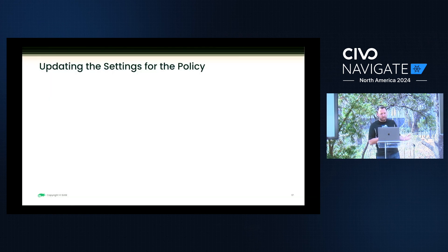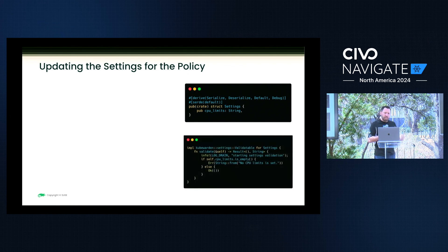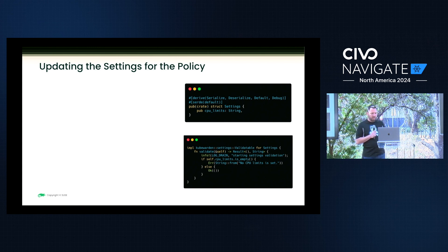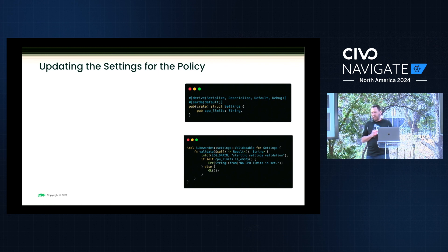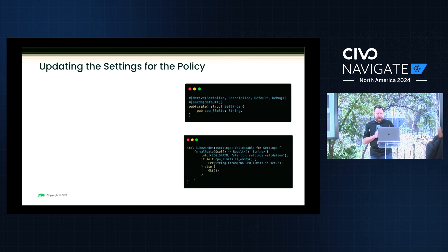Within the settings file, I'm setting a string for our CPU limits. We need to be able to validate that we're getting those settings, because without settings Kubewarden will bark and not allow that. We have an implementation that validates the settings are present — that function needs to be there and run successfully, and it needs to be able to find the string for all settings.